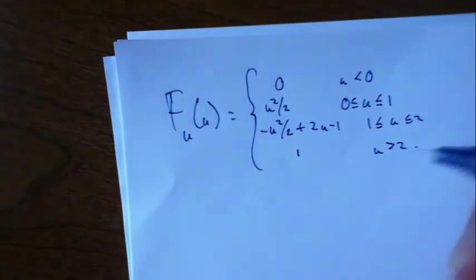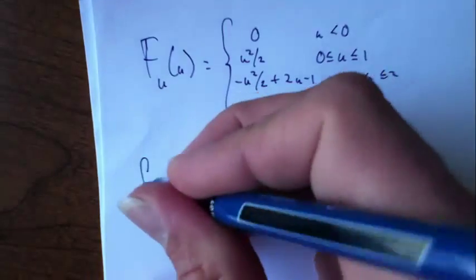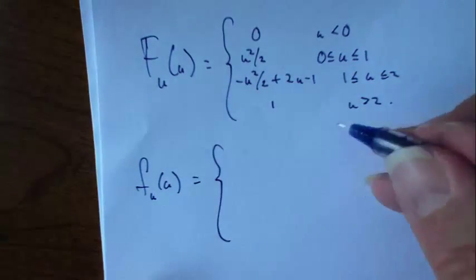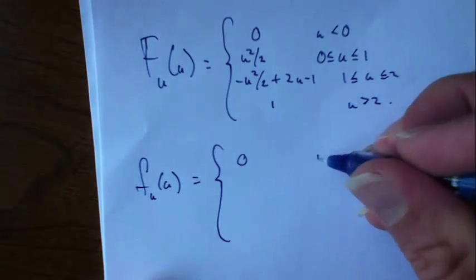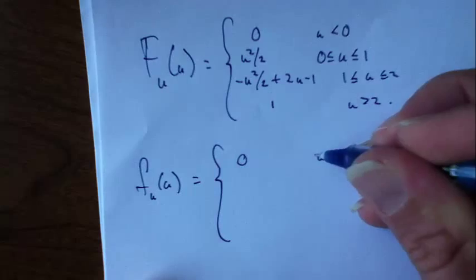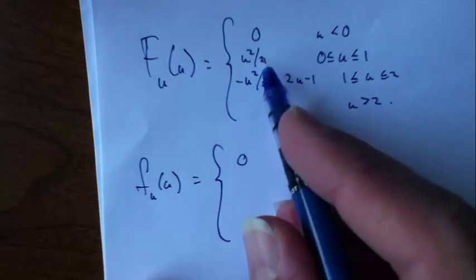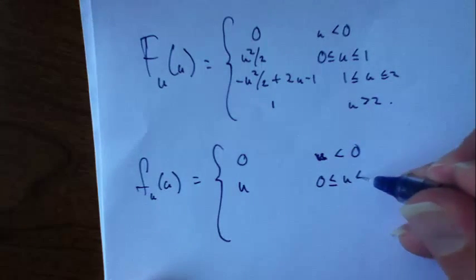Now how do you get the PDF for u? Easy. F sub u of u, let's just differentiate. It's 0 for u less than 0. And then take the derivative of this stuff with respect to u, it's just u. It's u for u in the unit interval.